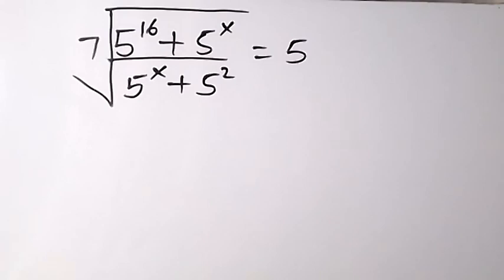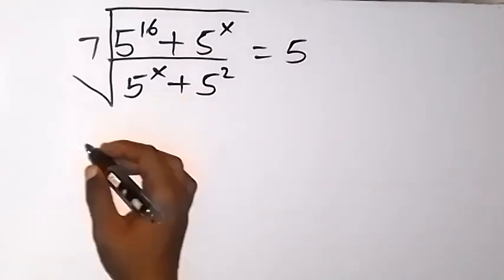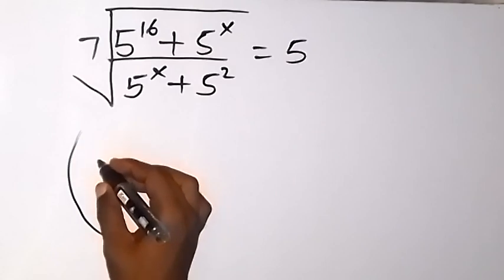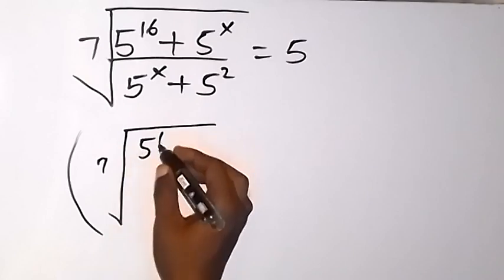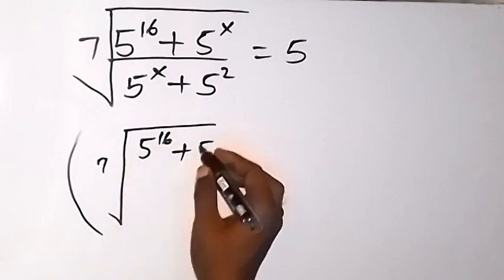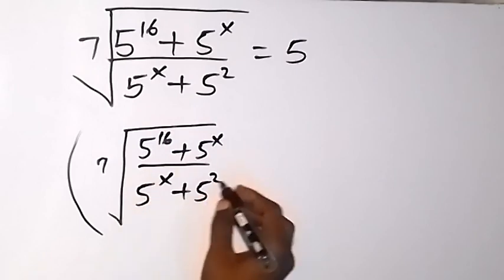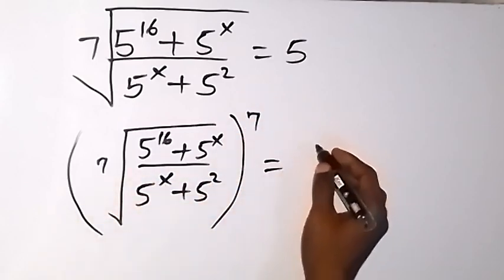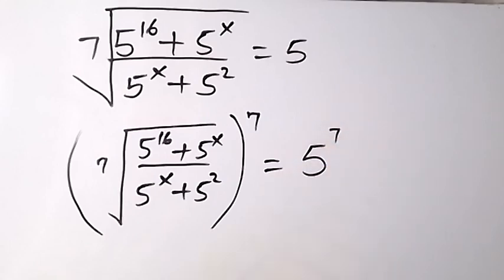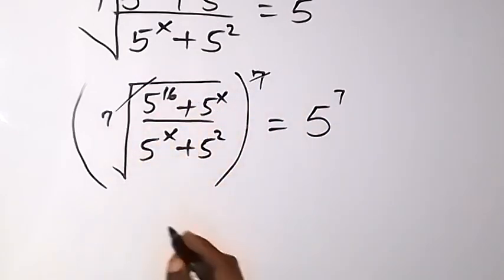Solving this, we can raise both sides to power 7. So we raise the 7th root of 5 raised to power 16 plus 5 raised to power x, over 5 raised to power x plus 5 raised to power 2, everything to power 7 on this side, which is equal to 5 raised to power 7 on the other side.